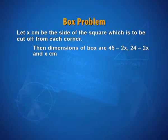That means, the dimensions of the box are 45 minus 2x, 24 minus 2x and x centimeter. 2x because from both the sides, the box of square of x unit length has been cut off. So, 2x units have been taken off from length and breadth and the height as you saw earlier was the same as the side of the square cut off that is x.